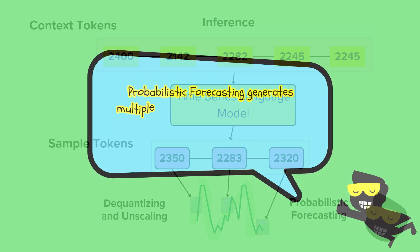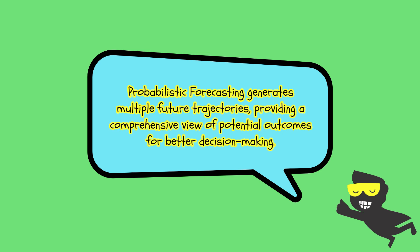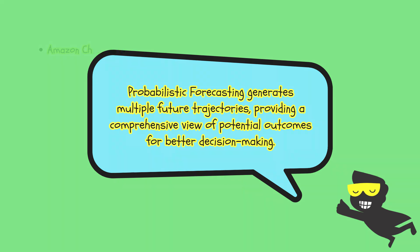Probabilistic forecasting in Chronos involves generating a range of possible future values rather than one single prediction. After the context tokens are processed by the LLM, they are de-quantized and unscaled back into the original value range. This results in multiple possible future trajectories, each representing a different scenario.